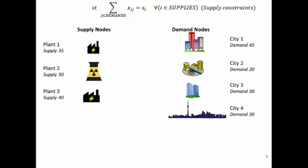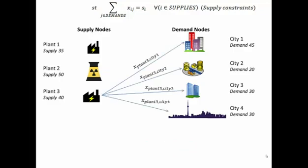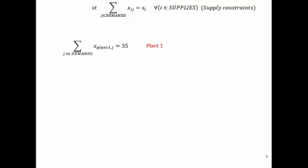We don't want it to be less than 35, or this plant would be producing electricity that didn't have a place to go. And we don't want it to be more than 35 because then it would be shipping electricity that didn't exist. So the electricity shipped out of plant one has to equal the supply at plant one. We have a similar constraint for plant two — whatever we're sending out of plant two has to exactly equal what's available. And then for plant three, all the different amounts we're shipping to each city have to equal the supply at plant three. These all look very similar with the exception that we're changing the plant for each constraint.